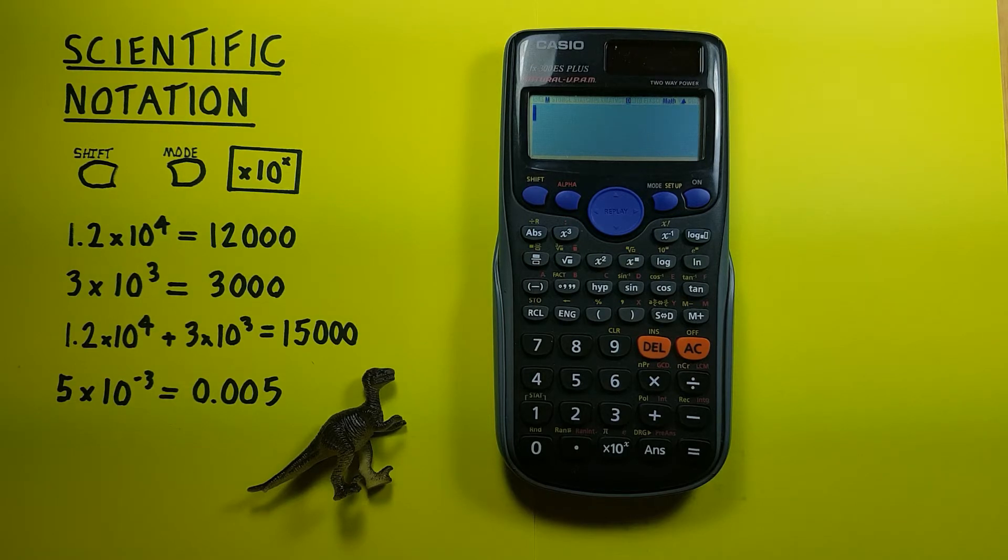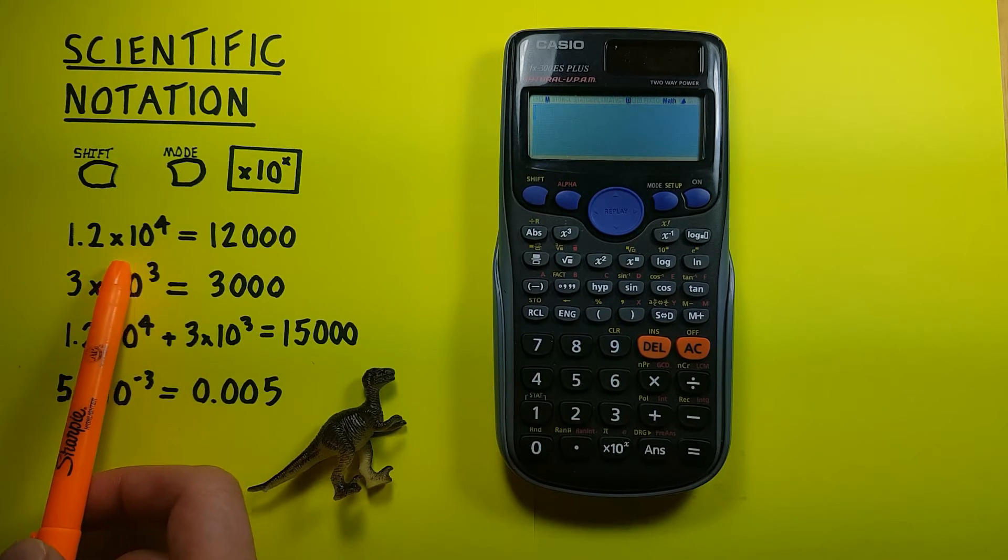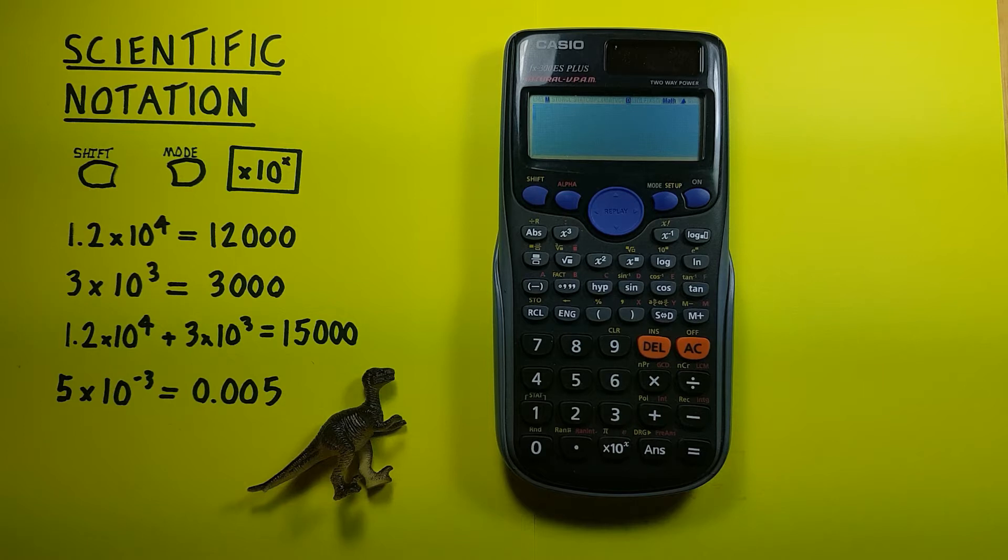So scientific notation is great if we want to simplify really large complex numbers, but it might be difficult to enter into our calculator. If we wanted to enter it straight up, like let's say we got given 1.2 times 10 to the fourth power, and we wanted to enter that in our calculator.